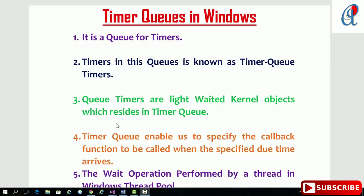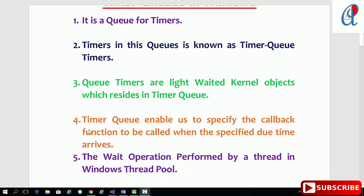Hey guys, this is another video tutorial of Windows system programming. In this video tutorial we are going to see the timer queue in Windows. Basically, a timer queue is a queue for the timers, and a timer in this queue is known as a timer queue timer. Queue timers are lightweight kernel objects which reside in the timer queue.